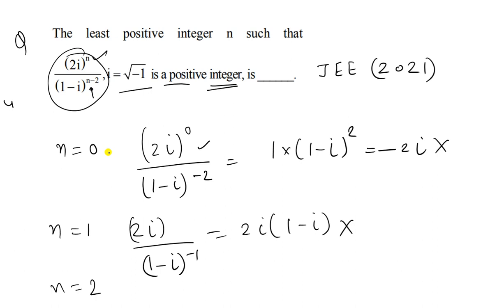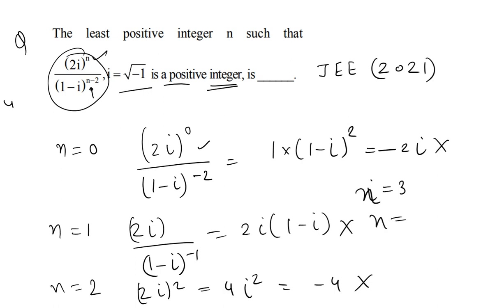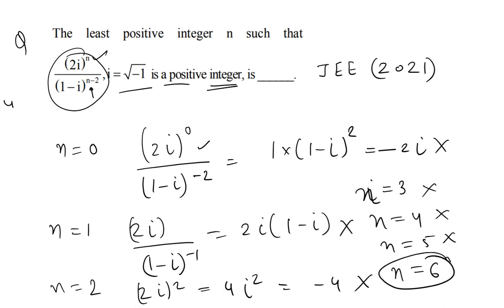When n = 2, we get 2i squared which is negative. Checking n = 3, 4, 5 also does not give a positive integer. So the positive integer result will be at n = 6.